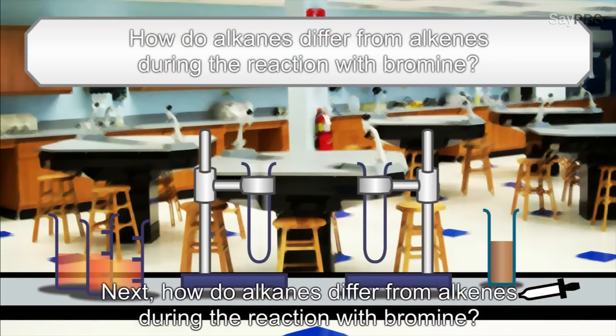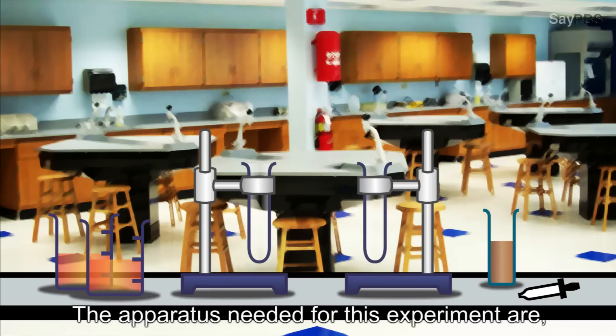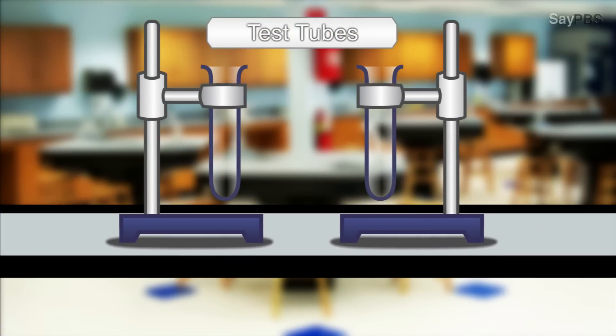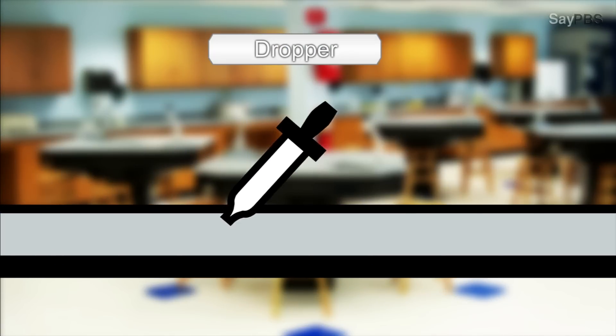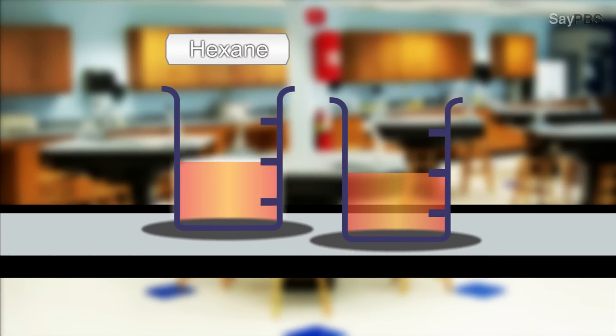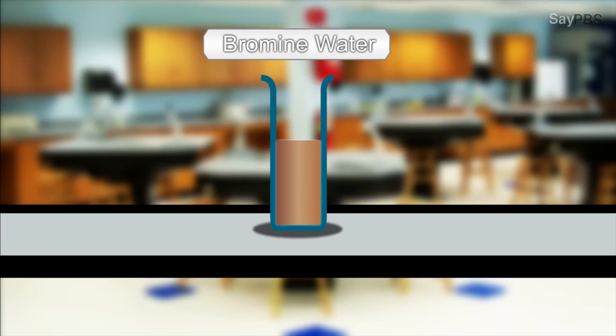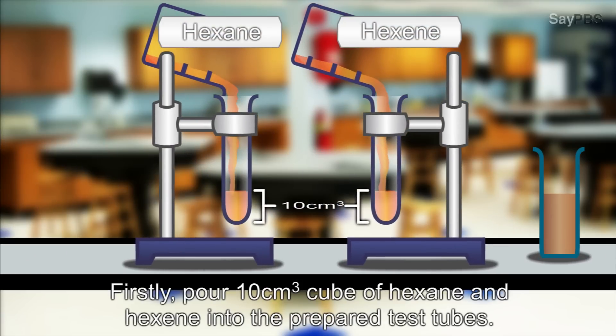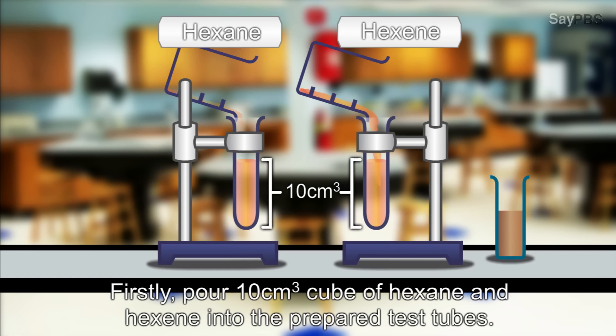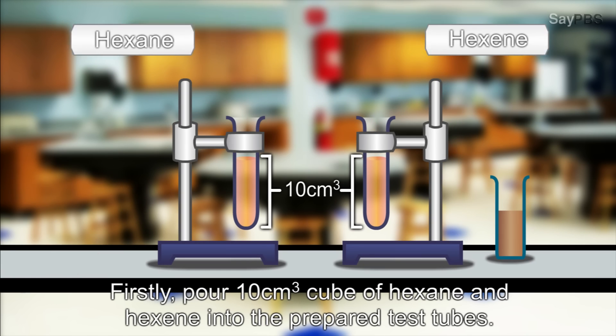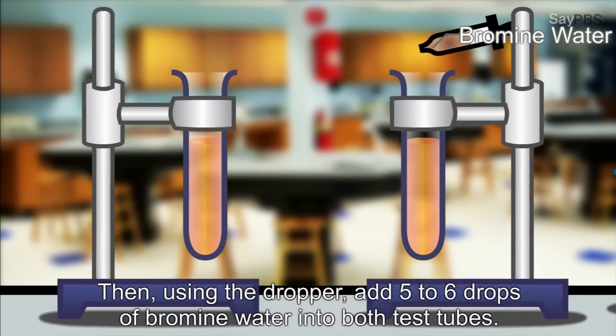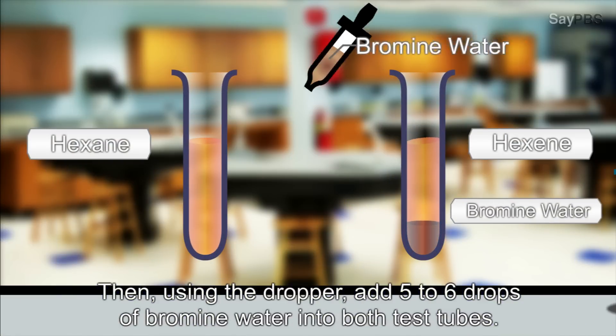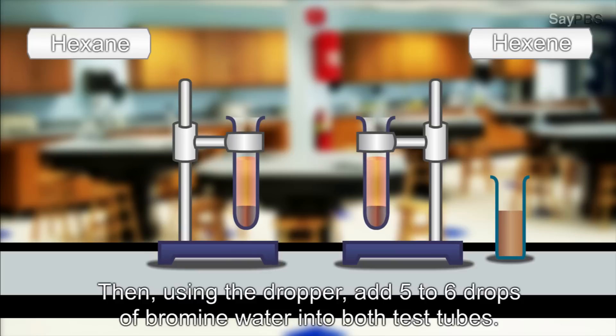Next, how do alkanes differ from alkenes during the reaction with bromine? The apparatus needed for this experiment are test tubes, dropper, hexane, hexene and bromine water. Firstly, pour 10 cubic centimeters of hexane and hexene into the prepared test tubes. Then, using the dropper, add 5-6 drops of bromine water into both test tubes.